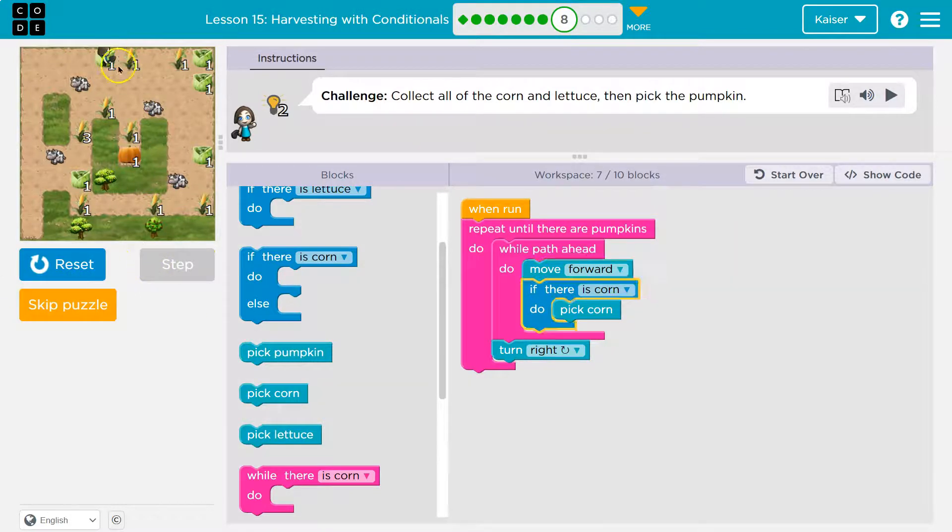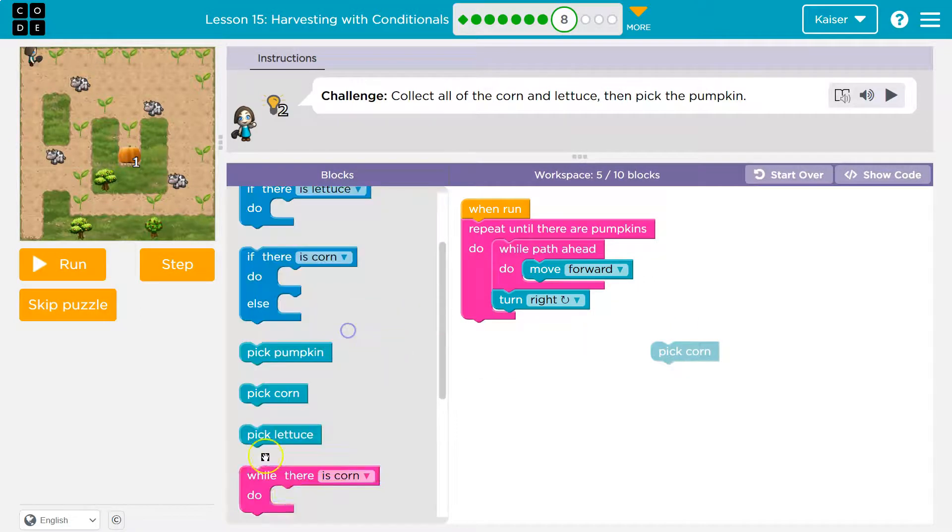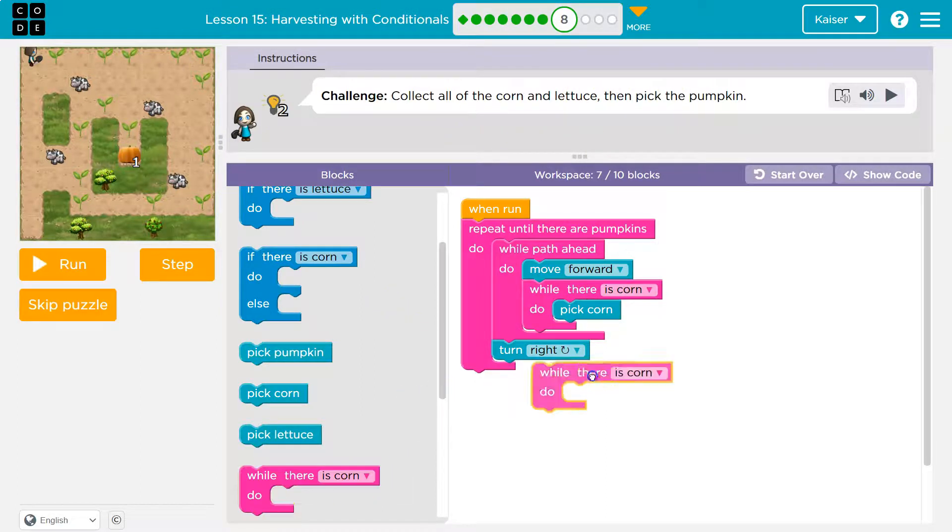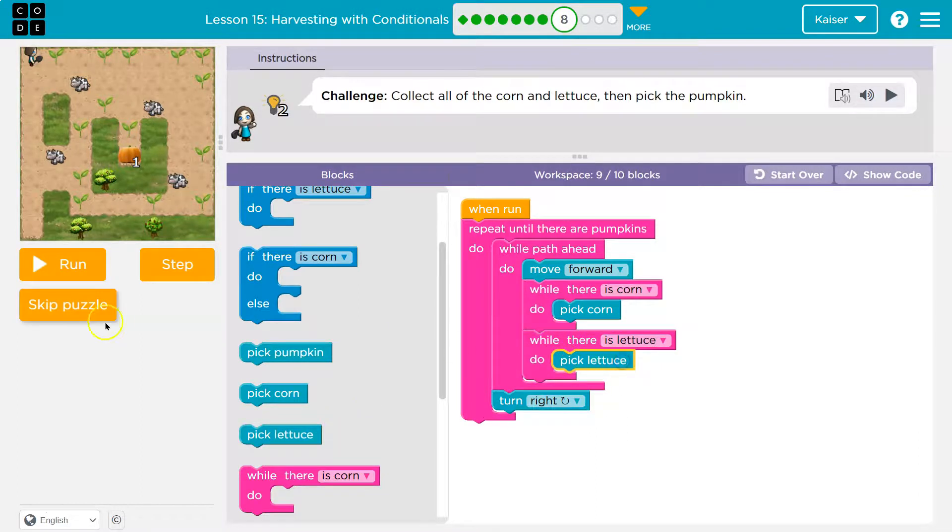So right after I check this path ahead, I move forward, I'm going to say okay. And then if there's corn, pick corn. And I want you to see why this isn't going to work. So I'm going to definitely get all this corn, right? But once I get over here, it's going to say move forward. If there's corn, I pick one piece of corn. And then I keep going because if only runs once. I need to keep checking if there's corn, right? I need to check a bunch of times. While as long as there's corn, you're going to want to keep picking corn. Now what else can there be? Well, I think there's lettuce too, right? So while there is lettuce, I want to keep picking lettuce. So let me walk through some of this with you.